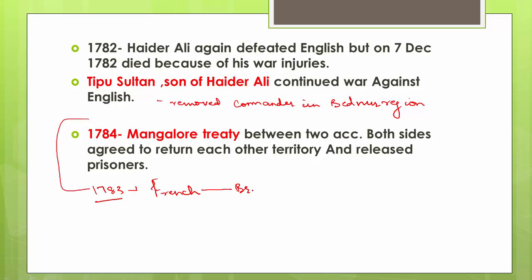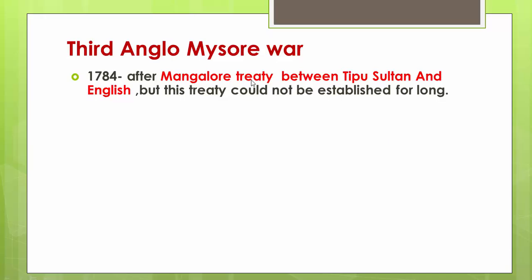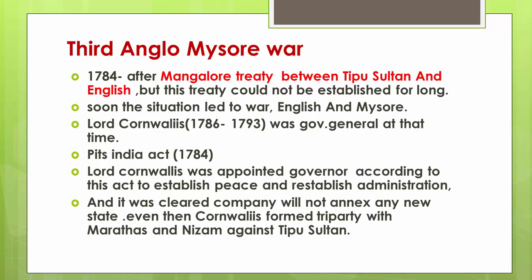In 1783, the French — who had been siding with Tipu Sultan — left him midway due to a treaty between France and Britain. Mysore was also vulnerable to Maratha attack. Because of all this, Tipu Sultan signed the Mangalore Treaty in 1784, according to which both sides agreed to return each other's territories and release war prisoners. Tipu Sultan withdrew his army from Karnataka and the English withdrew theirs from the Malabar region.